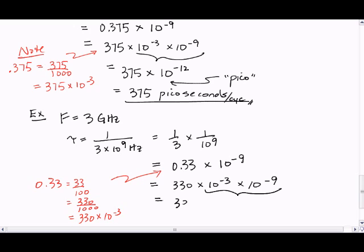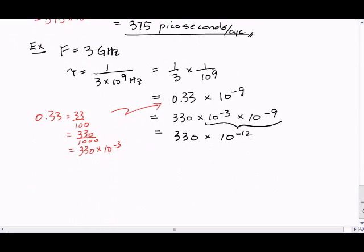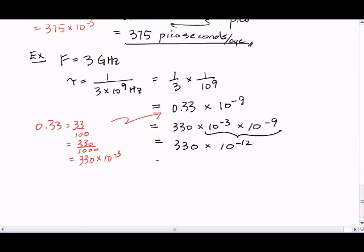We can use the law of exponents to group our powers of 10 together to get 10 to the minus 12, which is picoseconds. So we can say this is 330 picoseconds per cycle.